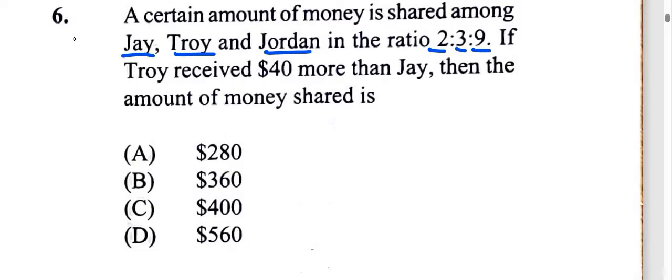Now, we're told that Troy received $40 more than Jay, and we can clearly see that Troy also received one part more than Jay. Jay received two parts, Troy received three parts.